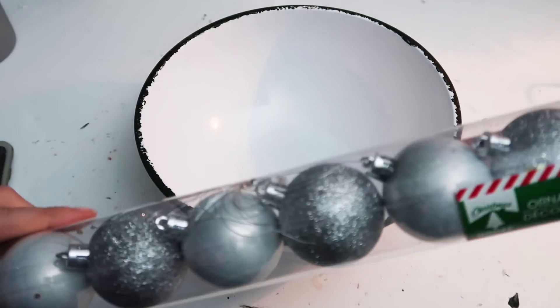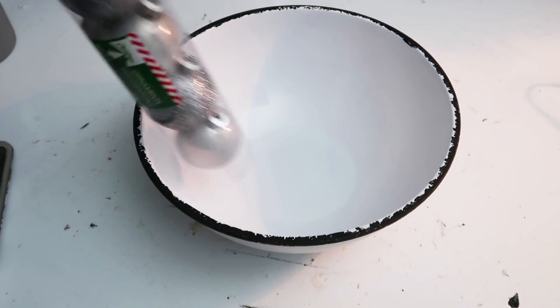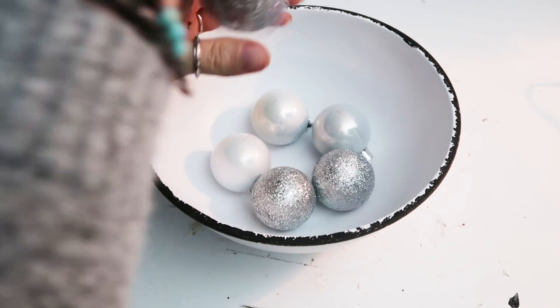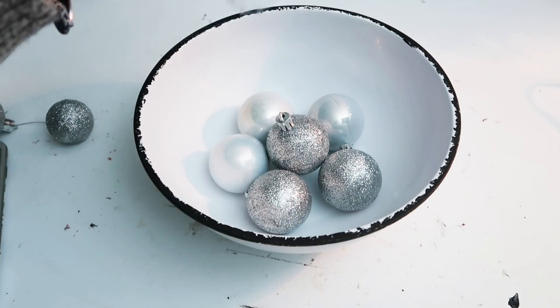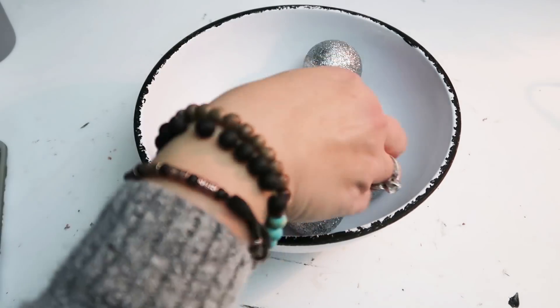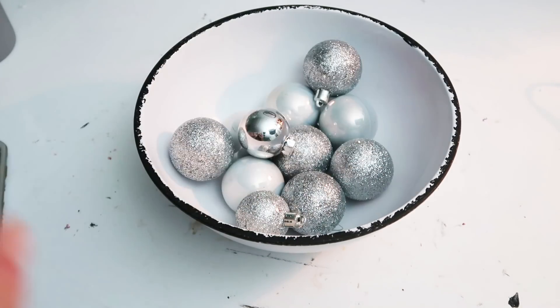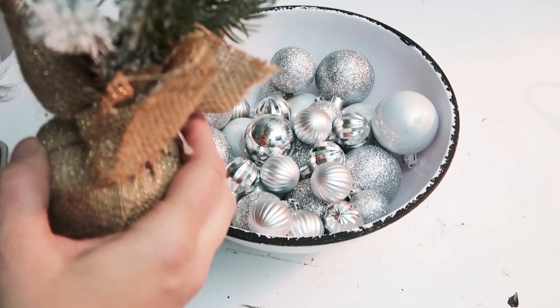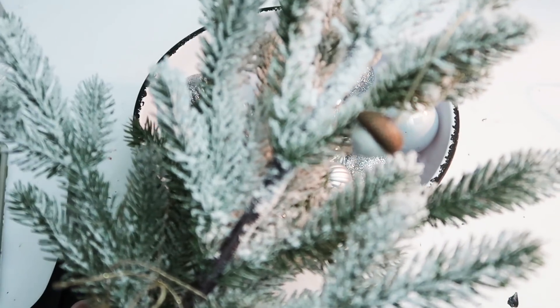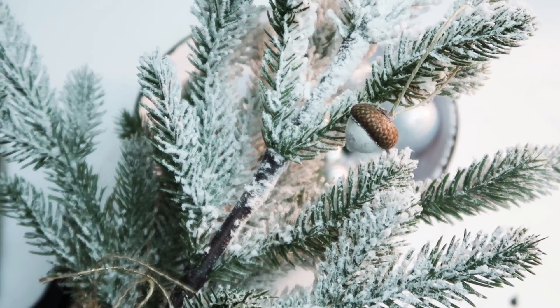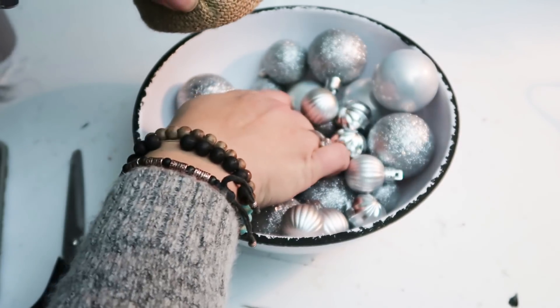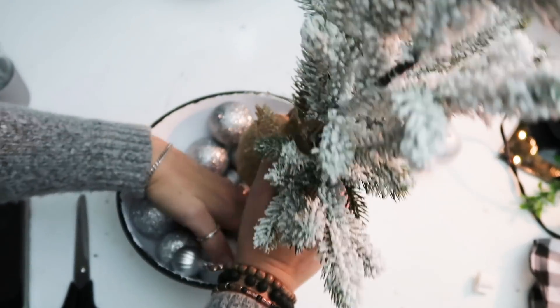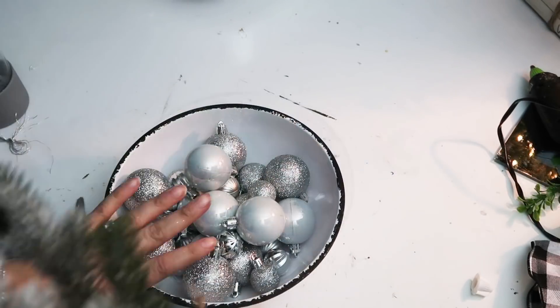And then I'm taking some ornaments, these happen to be from the Dollar Tree but you could use whatever you have. I did this a little bit backwards, you're going to see me struggle here. I should have put the tree in first but I was so excited to put the ornaments in. These little ones are also from the Dollar Tree. And then I'm taking this tree from the Target Dollar Spot. This is where I was really struggling. I don't know why I didn't put the tree in first, that was really really dumb.